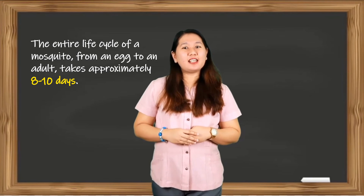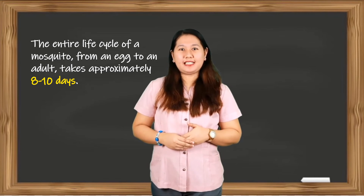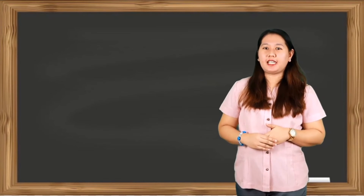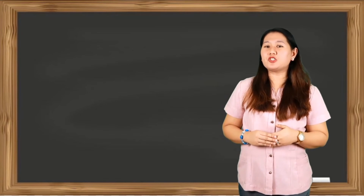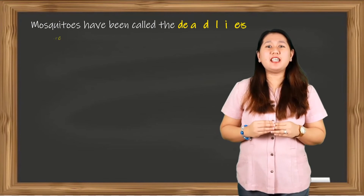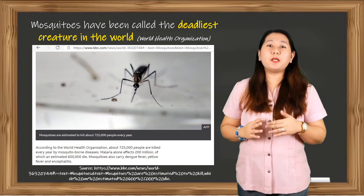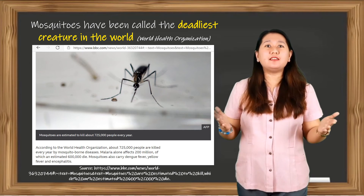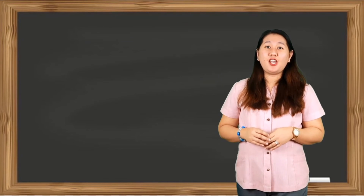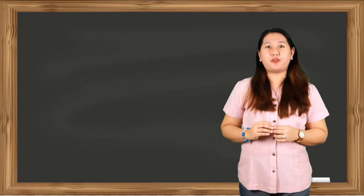The entire life cycle of a mosquito from an egg to an adult takes approximately 8 to 10 days, and that completes the cycle, ready to start all over again. Understanding the mosquito is crucial to effective prevention and control. In fact, mosquitoes have been called the deadliest creature in the world according to the World Health Organization, because of their ability to carry and spread diseases to humans, causing millions of deaths every year.